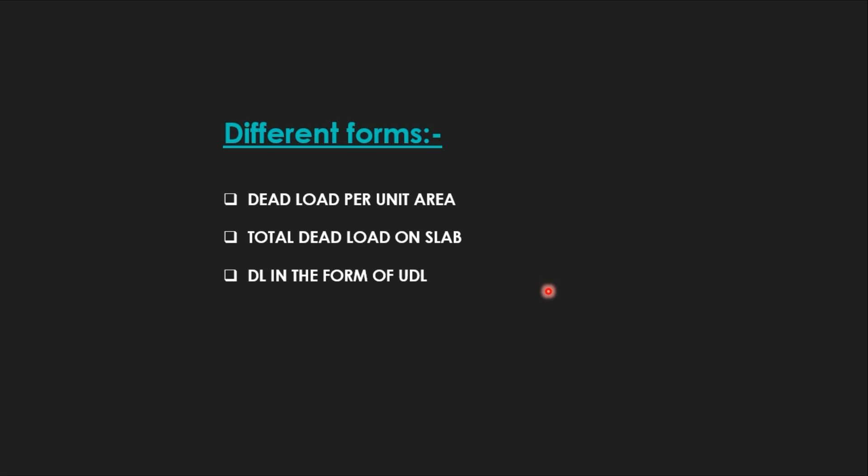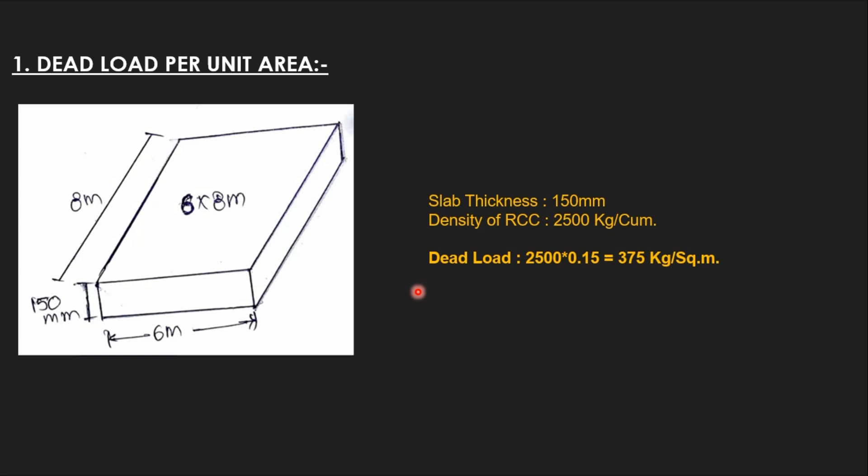We can calculate the dead load of slab in three different forms. The first one is dead load per unit area, the second form is total dead load on slab, and we can calculate the dead load in the form of UDL in order to calculate the bending moment. Assume the thickness of slab if it is not given; in our case, we have 150 mm as thickness of slab.